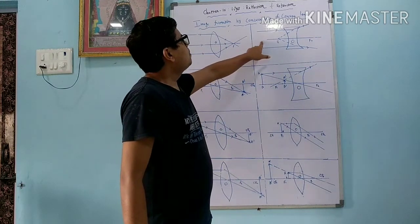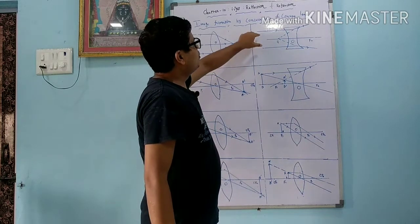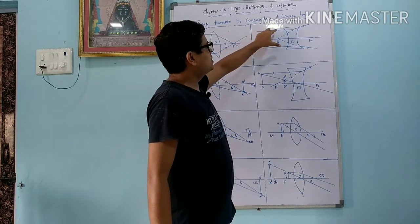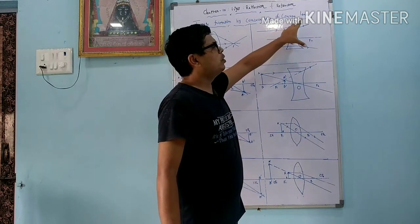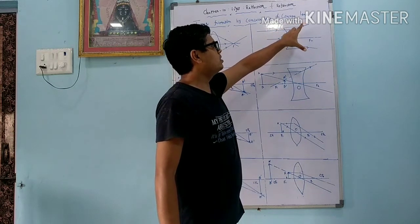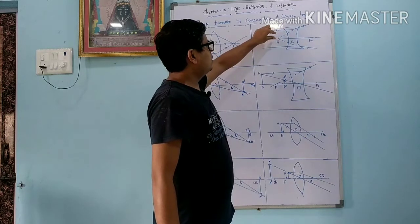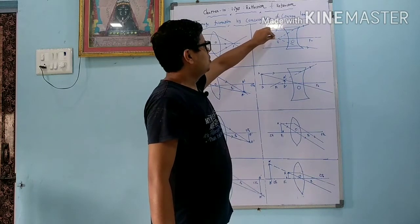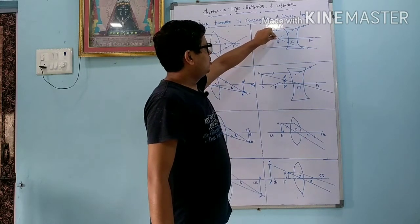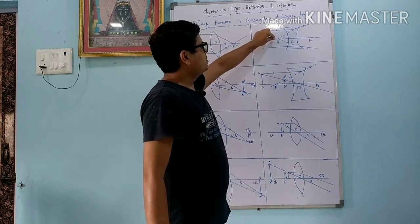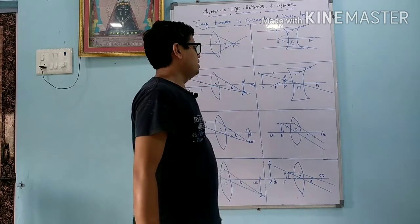In the concave lens, when we put the object at infinite distance, when the ray of light passes from the concave lens, all the rays go in different directions because they are divergent rays. So by extending, we get the image on the same side at the principal focus. The nature of the image is virtual and erect, and it is diminished on the same side of the lens.